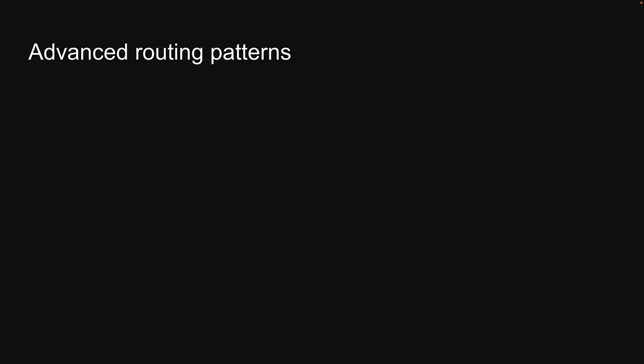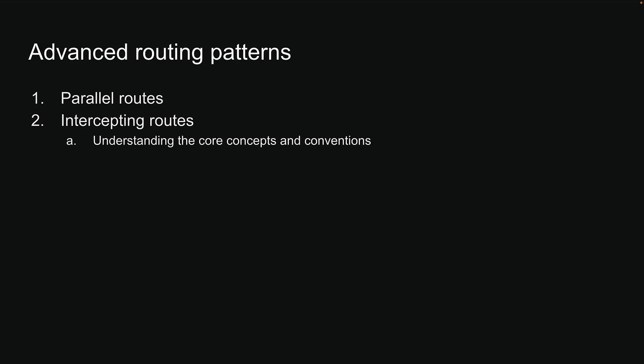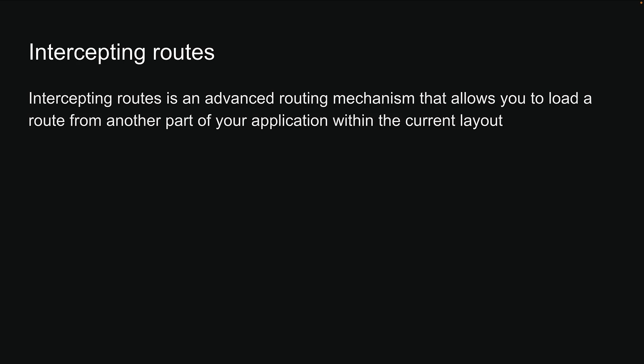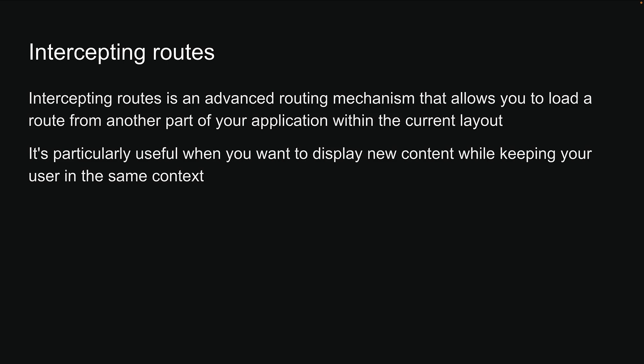The app router in Next.js introduced two advanced routing patterns. We've already learned about parallel routes. Now let's dive into intercepting routes. Intercepting routes is an advanced routing mechanism that allows you to load a route from another part of your application within the current layout. It is particularly useful when you want to display new content while keeping your user in the same context.